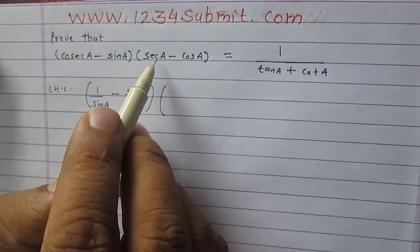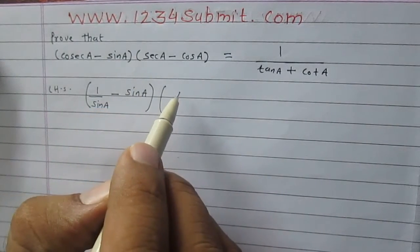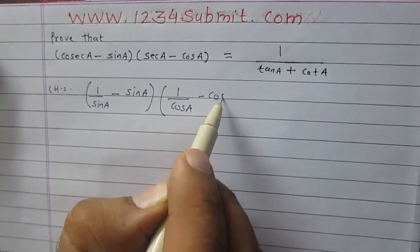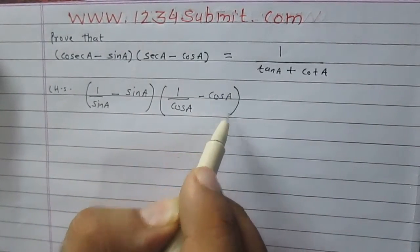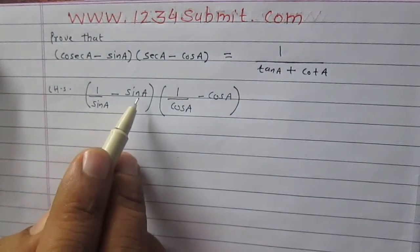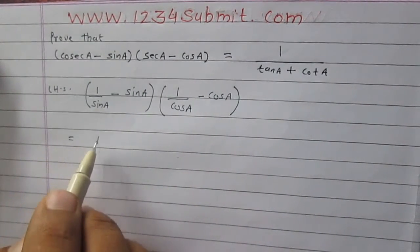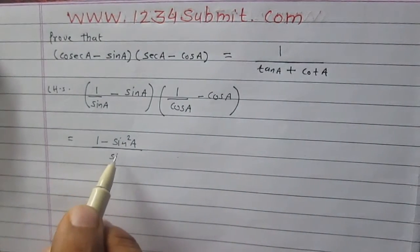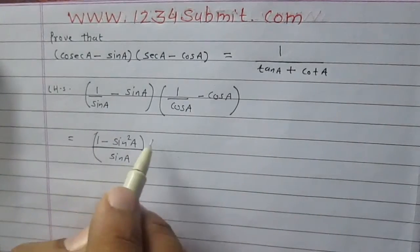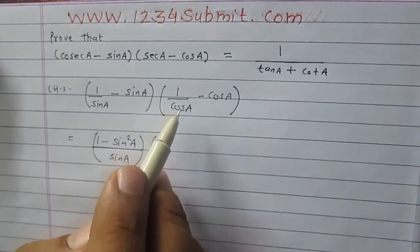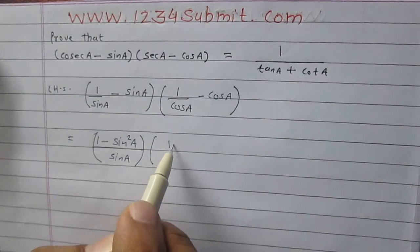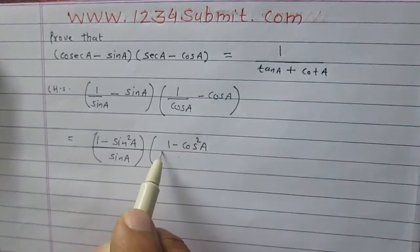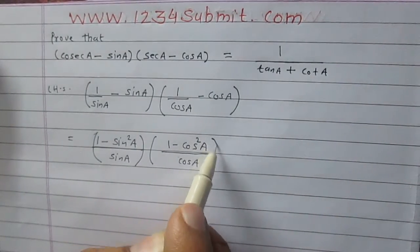Again, sec A is reciprocal of cos A, so we can write sec A as 1 upon cos A and then minus cos A as it is. The first term, 1 upon sin A minus sin A, can be written as 1 minus sin squared A upon sin A. The second term, 1 upon cos A minus cos A, can be written as 1 minus cos squared A upon cos A.